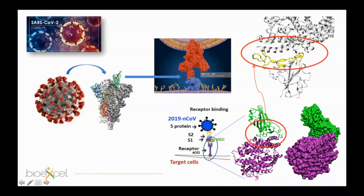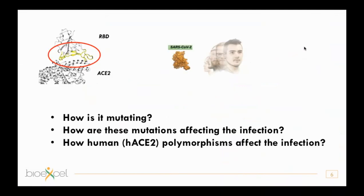In particular, we are interested in mutations at this interface — how the RBD interface is mutating, how these mutations affect virus infection of human cells, and also how polymorphisms in the human ACE2 protein affect infection from SARS-CoV-2. This is the first part of a more ambitious project objective.